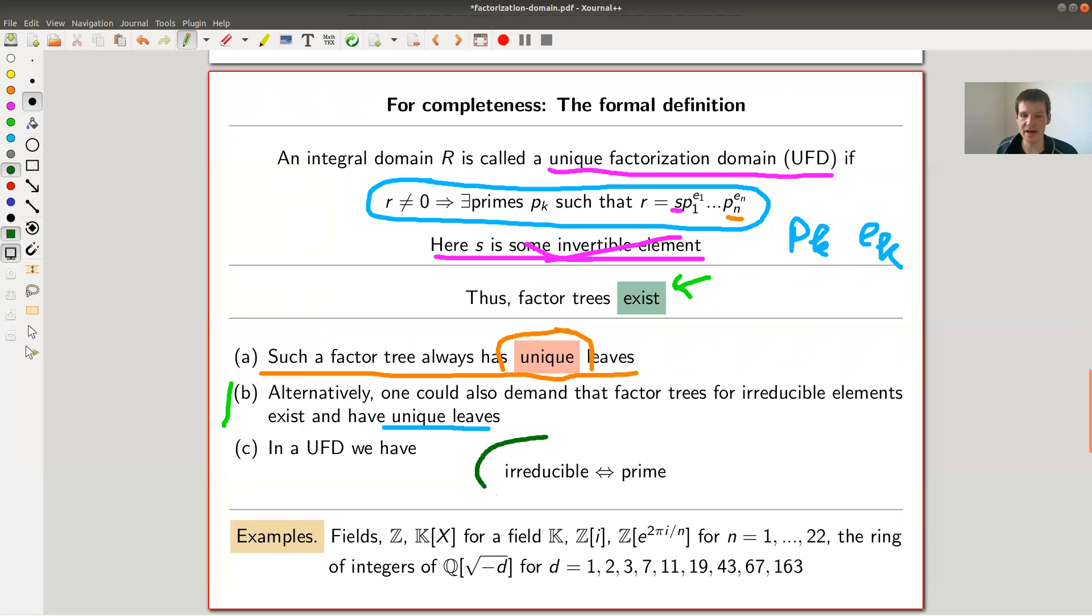And yeah like for the integers actually for those UFDs you don't care about the difference between irreducible and prime. And the standard examples are, since we don't care for inverses in this part of ring theory, or for invertible elements in this part of ring theory, the fields, of course, but maybe the main example are those two so polynomial rings and integers of course.